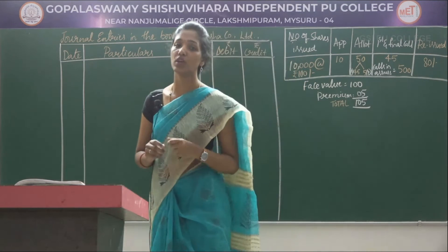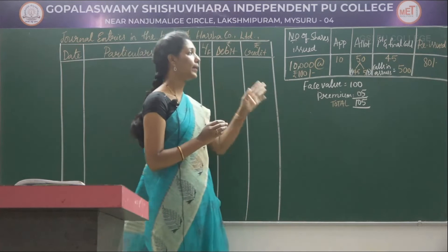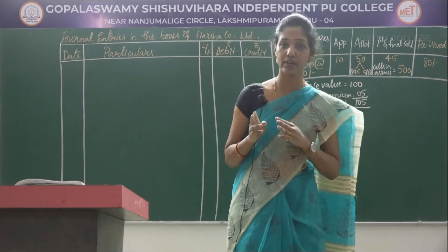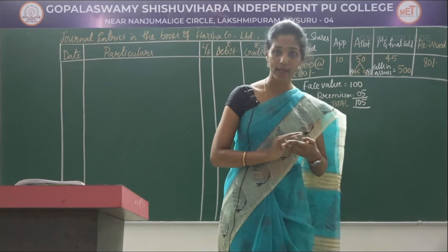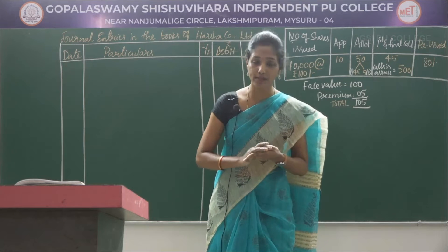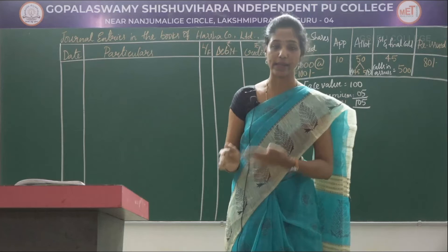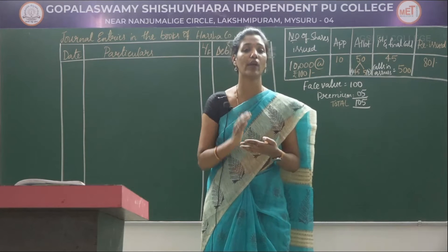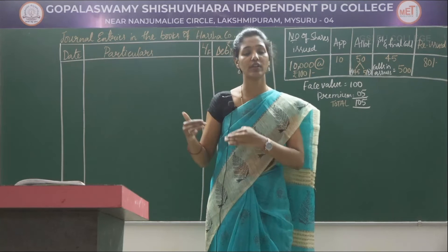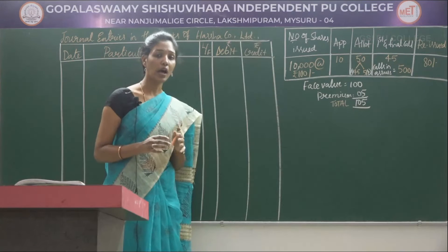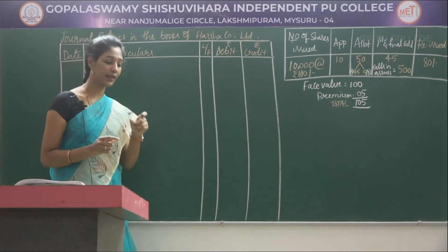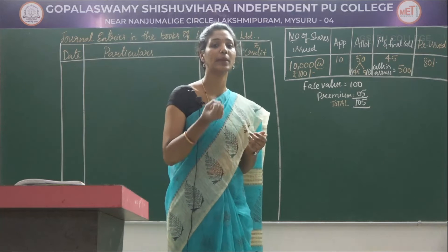Now let's write the first journal entry relating to application. Remember, each and every stage has two journal entries — on application stage you have to write two journal entries, on allotment stage two journal entries, and on first and final call stage two journal entries. The first journal entry relates to the application money received from the bank.